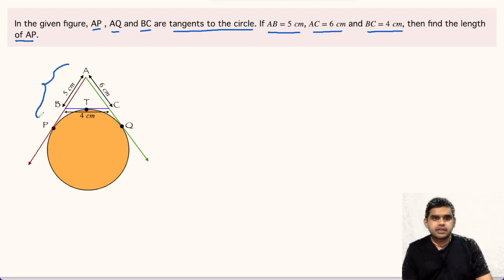That means this distance AP, and AP can be written as it is made up of two parts: AB plus BP. We can write AB plus BP. AB is already known to us, that is 5 centimeter plus BP.